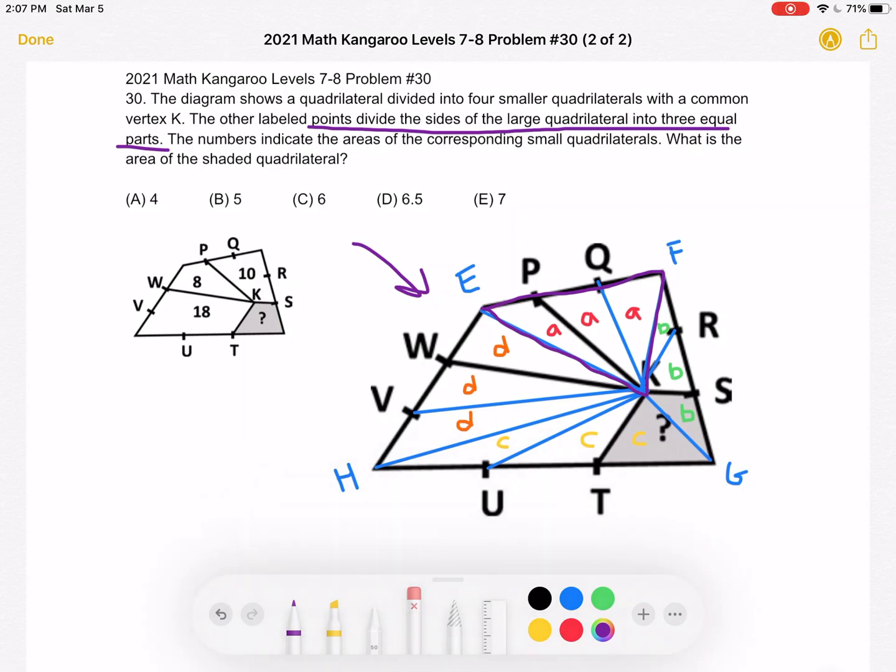So for example, if triangle EKP has an area of A, then triangle PKQ also has an area of A and triangle QKF also has an area of A. So we're going to continue on with this logic throughout the rest of the triangle. So then over here we can label the three individual triangles as having area B. Here they all have area C. And here they all have area D.